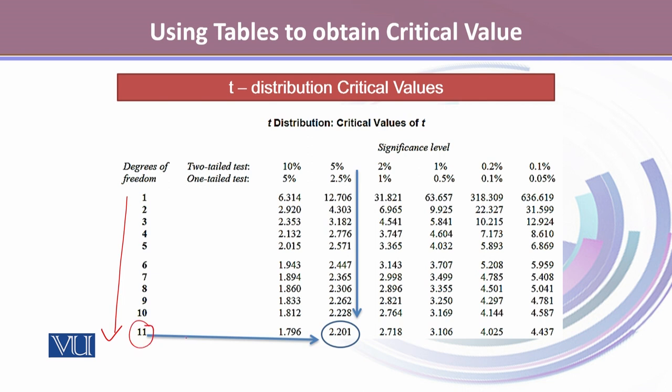then the value that corresponds to 11 degrees of freedom and 5% two-tailed significance level will be 2.201.